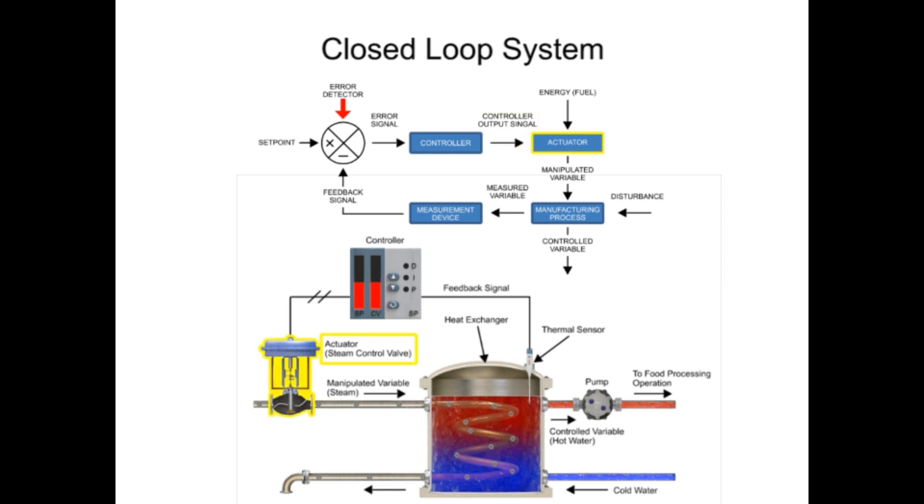A signal from the controller causes the controlled variable to match the set point using the actuator of the system. The flow valve represents the actuator, where steam flow is controlled.